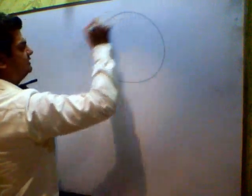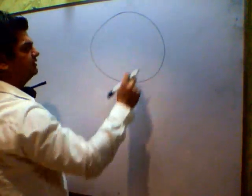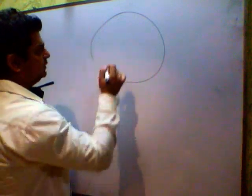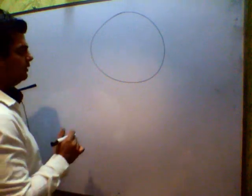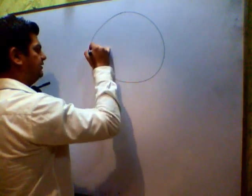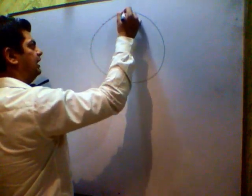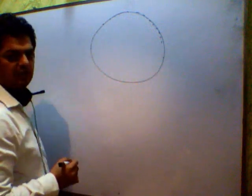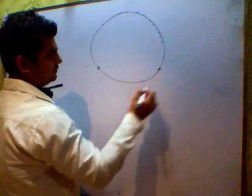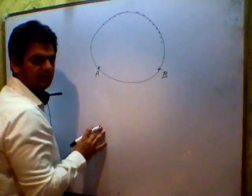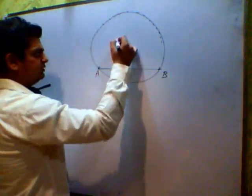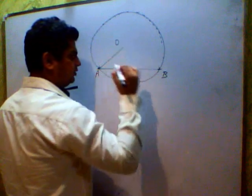Hello everybody, today we will be understanding circles and the angles of circles. A circle is a set of points which are placed such that they are equidistant from a fixed point. These points have a crucial role in handling things for circles. If I take two points, let's say A and B, then AB is a chord and O is the center.